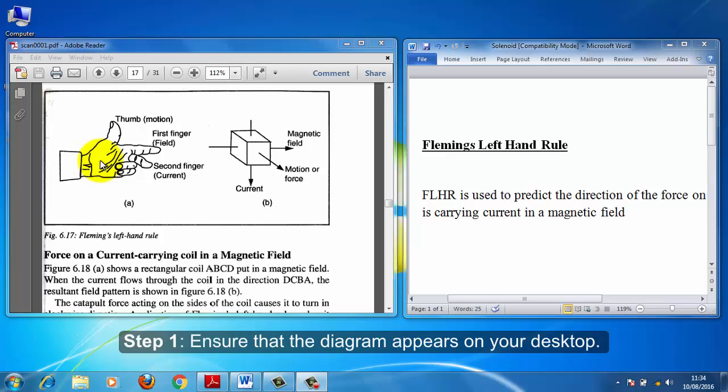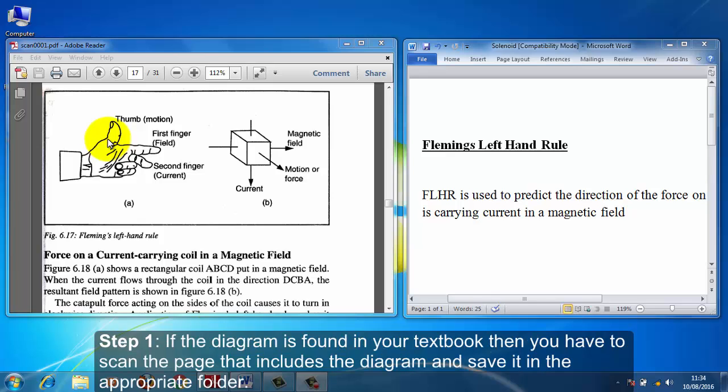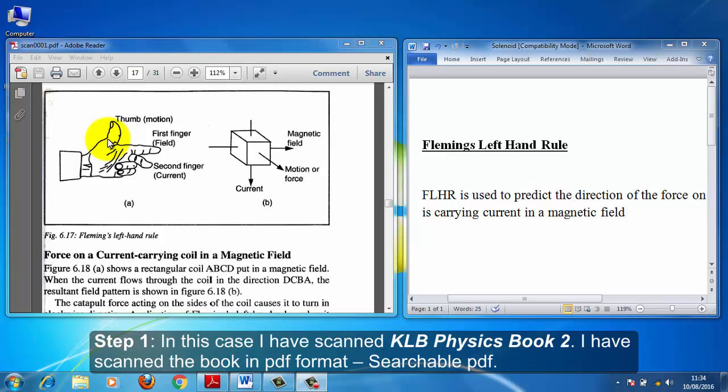Step number one. Ensure that the diagram appears on your desktop. If the diagram is found in your textbook, then you have to scan the page that includes the diagram and save it in the appropriate folder. In this case, I have scanned KLB Physics Book 2. I have scanned the book in PDF format, searchable PDF.